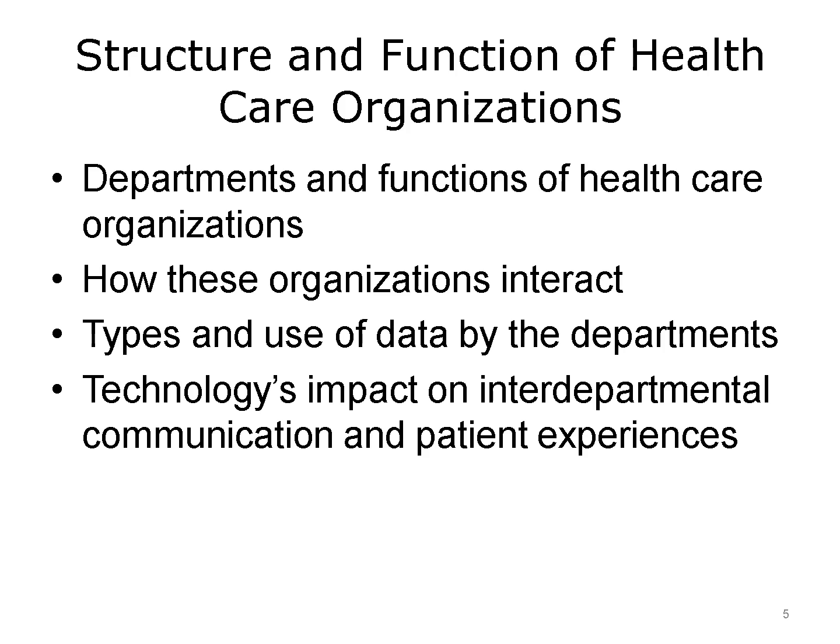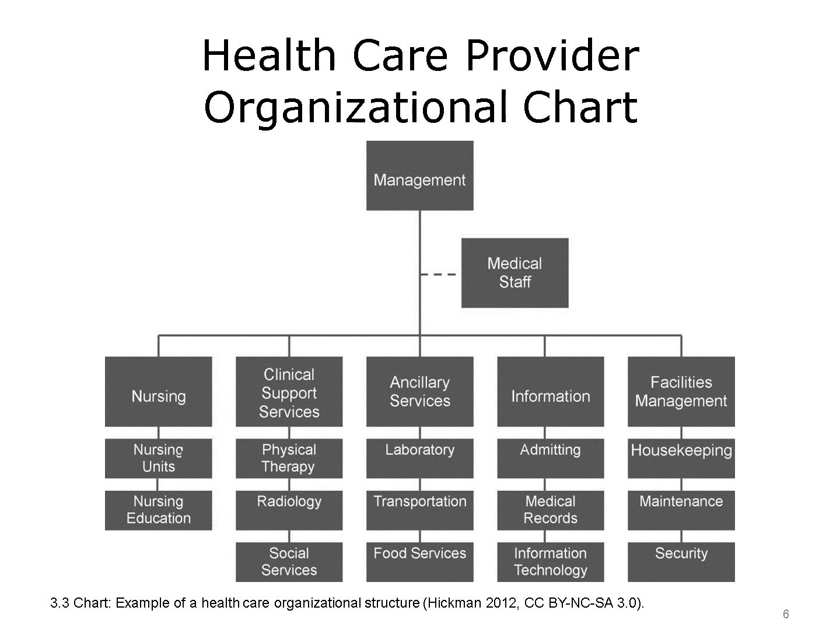This lecture provides an overview of departments and services offered by health care organizations. It takes a generic approach by describing typical organizational structures and functions of departments and identifies specific differences between organization types. Examples are provided within each of the broader departments that describe how departments interact, types of data used by the departments, and how health IT facilitates interdepartmental communication and the patient experience. This organizational chart displays an example of a simple health care provider structure representing commonly found divisions with their corresponding departments. This chart is not intended to be exhaustive.